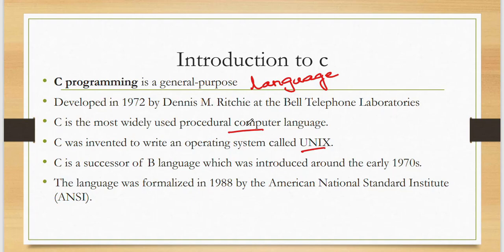C is also called the successor of the B language or BCPL language, which was introduced around the early 1970s. Bell Laboratories invented the BCPL and B languages, and the successor of B language is called C language. The language was formalized in 1988 by the American National Standard Institute, which is called ANSI — that's why it is also called ANSI C.